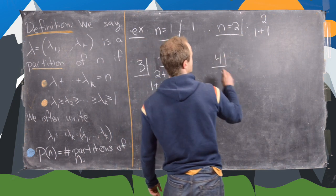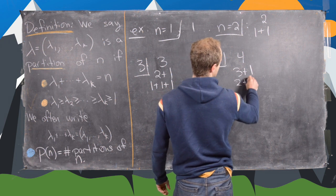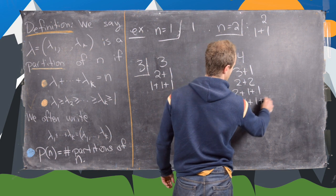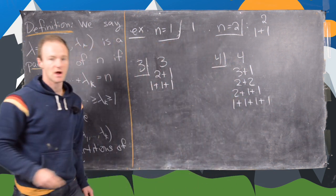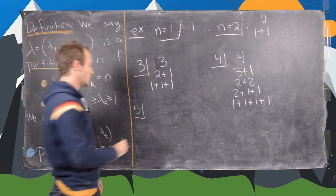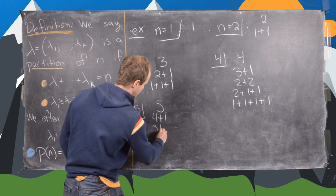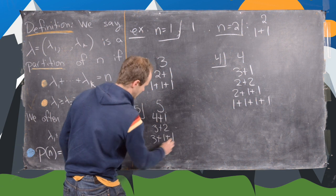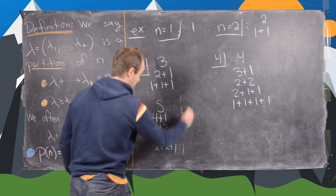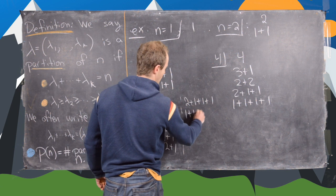For n equals 4, we have 4, 3 plus 1, 2 plus 2, 2 plus 1 plus 1, and 1 plus 1 plus 1 plus 1. For n equals 5, we have 5, 4 plus 1, 3 plus 2, 3 plus 1 plus 1, 2 plus 2 plus 1, 2 plus 1 plus 1 plus 1, and finally all 1s.